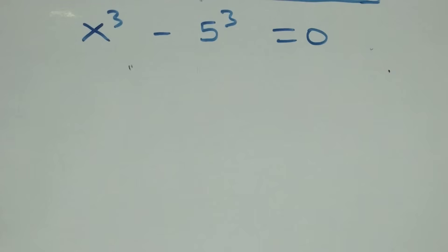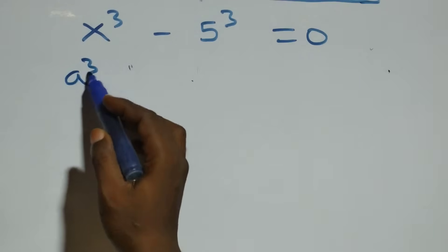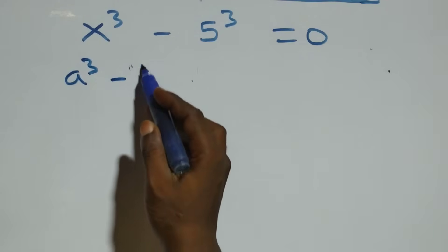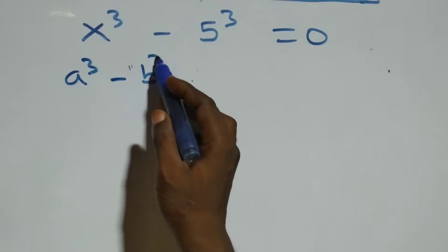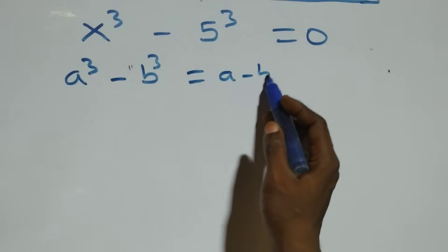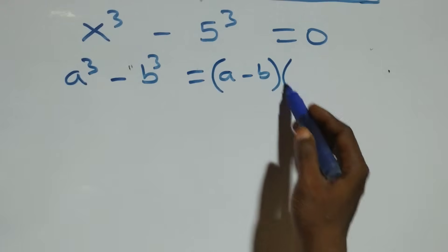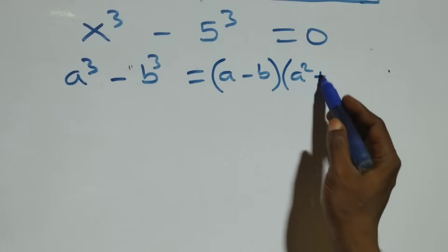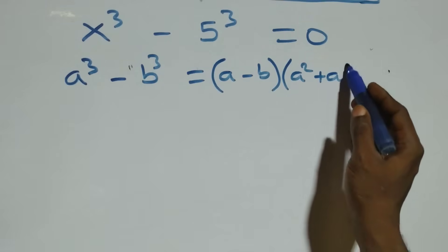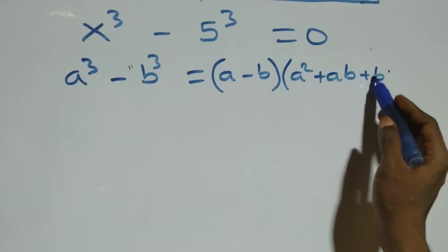Solving from the second case: x raised to power 3 minus 5 raised to power 3 equals 0. This follows the difference of cubes formula: a cubed minus b cubed equals a minus b, in brackets, times open bracket a squared plus ab plus b squared.